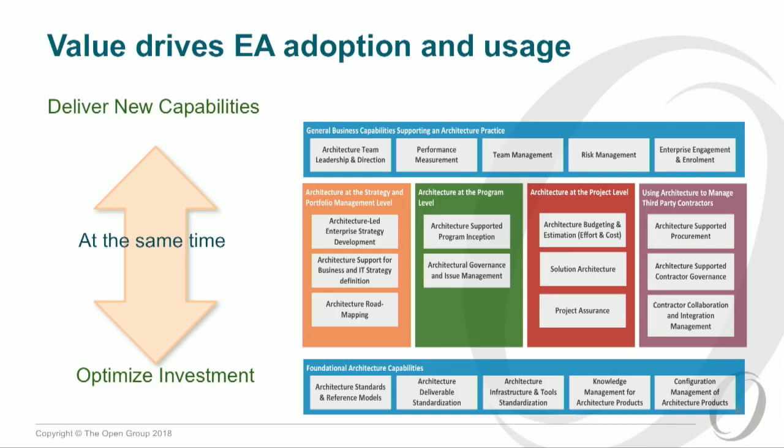From a contextual standpoint, why are people using EA? There are two basic activities: delivering new capabilities while at the same time optimizing investments. The investment side is not simply driving down costs and cutting headcount. Most often what's actually occurring is a reinvestment of efficiency savings into other areas of the business to drive growth — which is very different from a hard bottom-line-numbers approach.